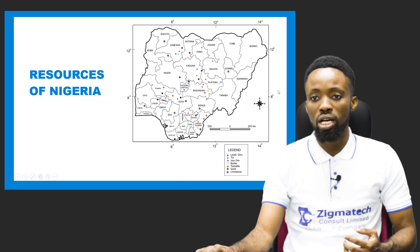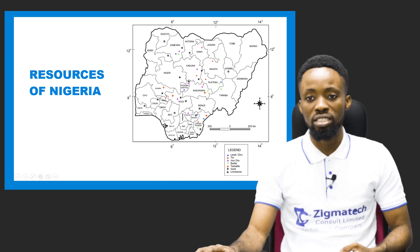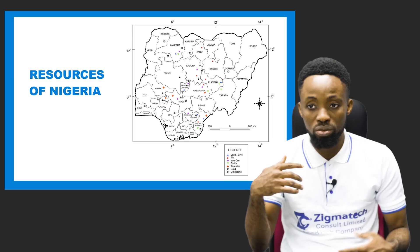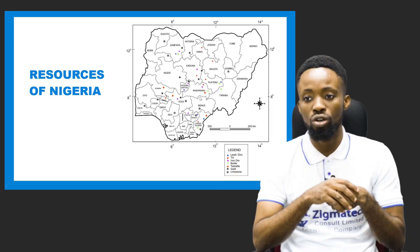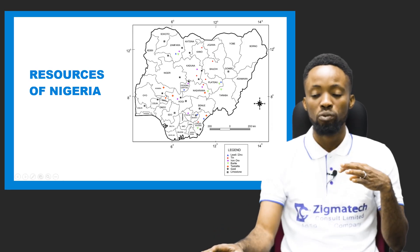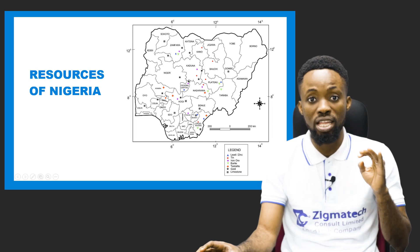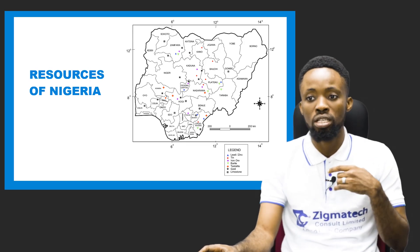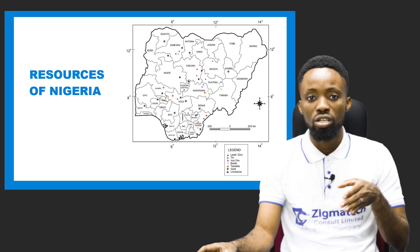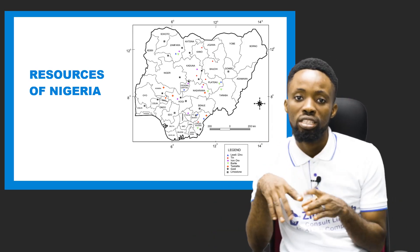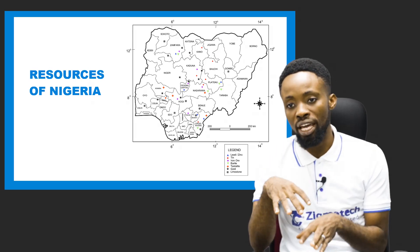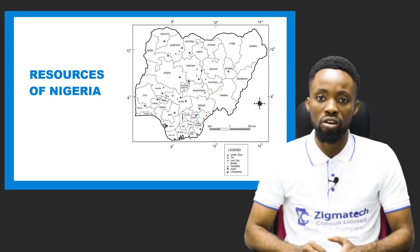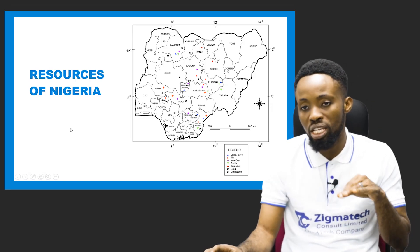Let's look at the map of Nigeria. As you can see, this is a map of Nigeria showing the various resources, especially mineral resources that we have in the country. This map shows that in Nigeria we have things like tin, iron ore, limestone, gold, bauxite, columbite, lead and zinc, and other non-mineral resources. As you go across all the states in Nigeria, you realize that all of these mineral and non-mineral resources can be found.